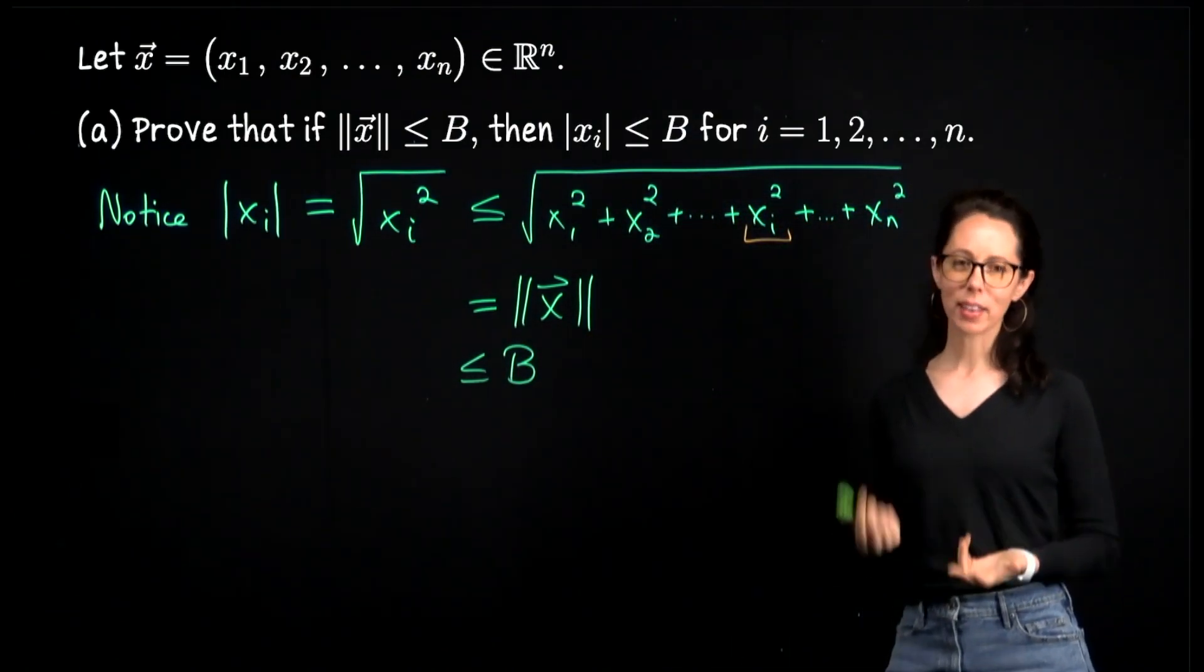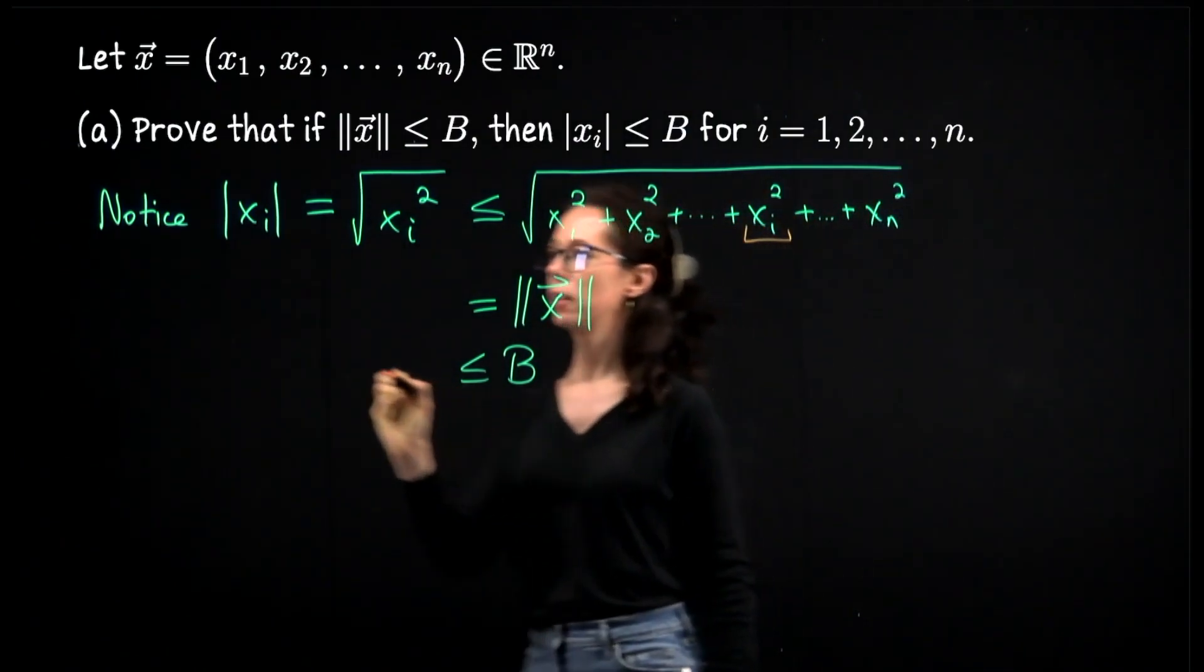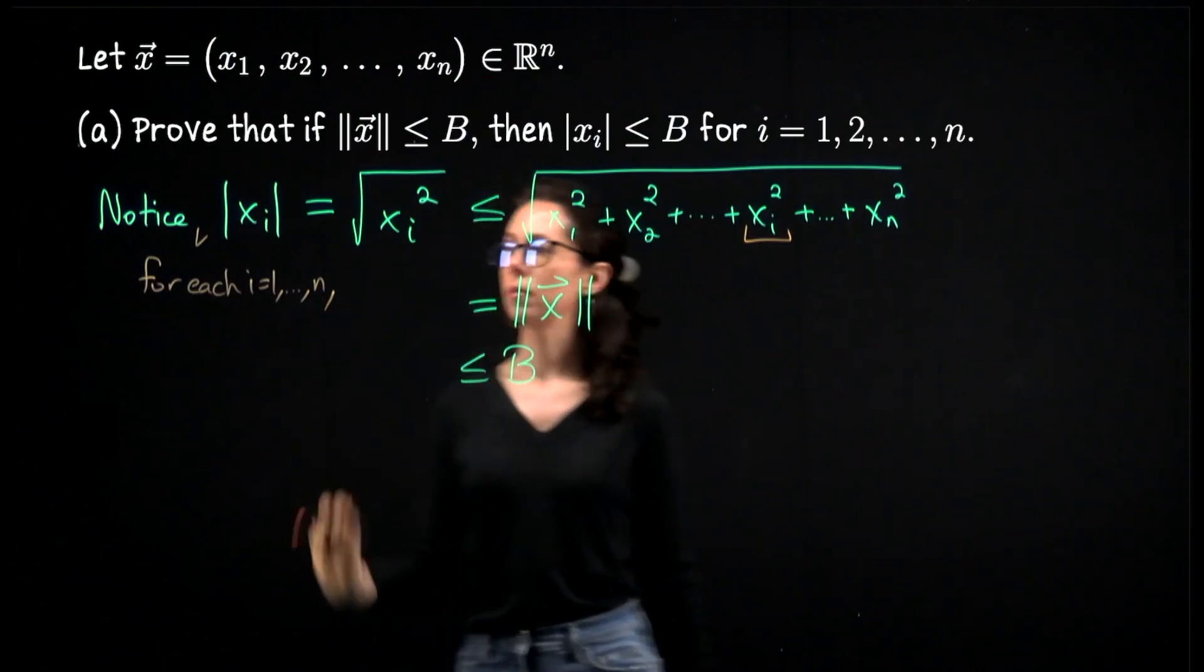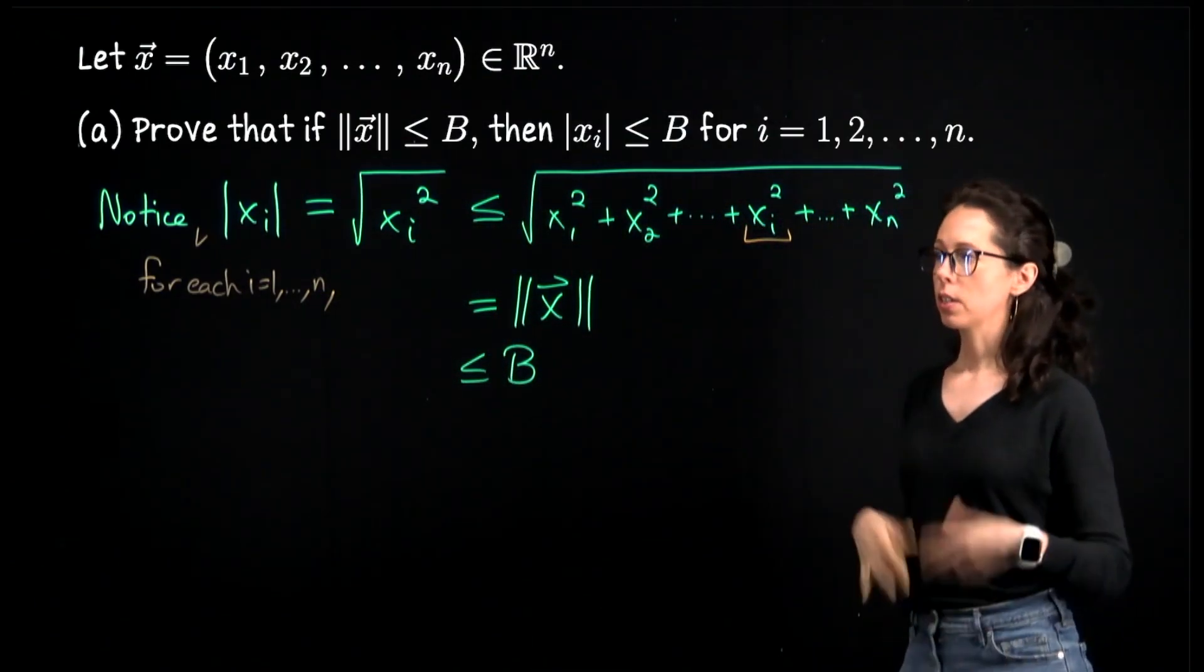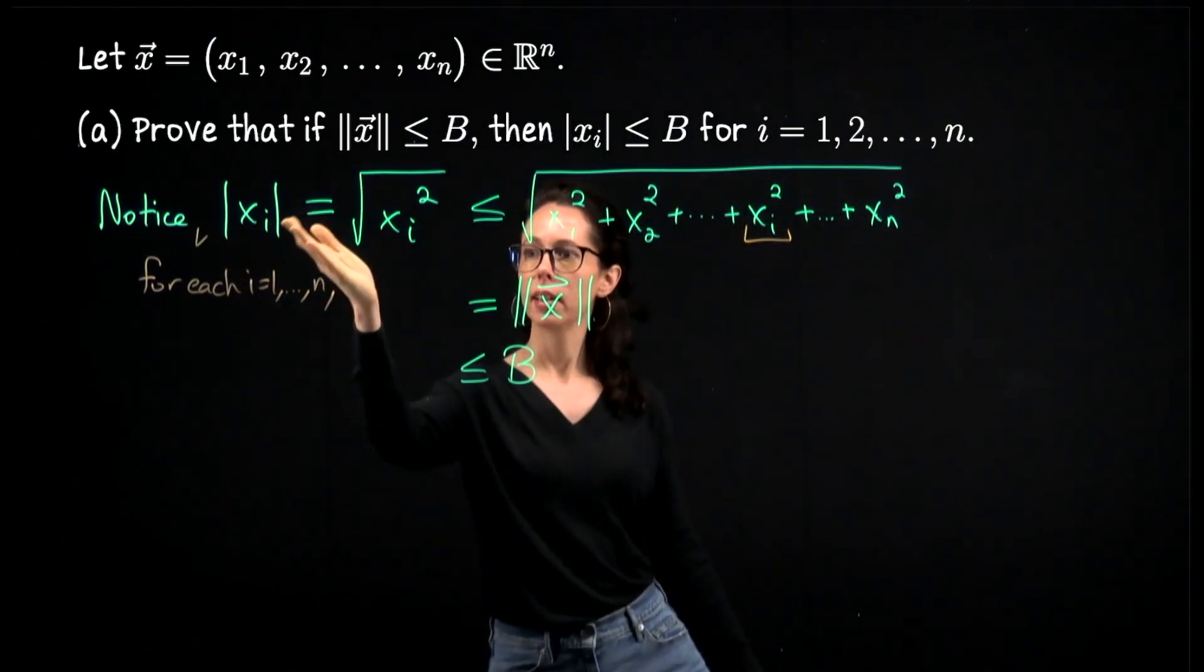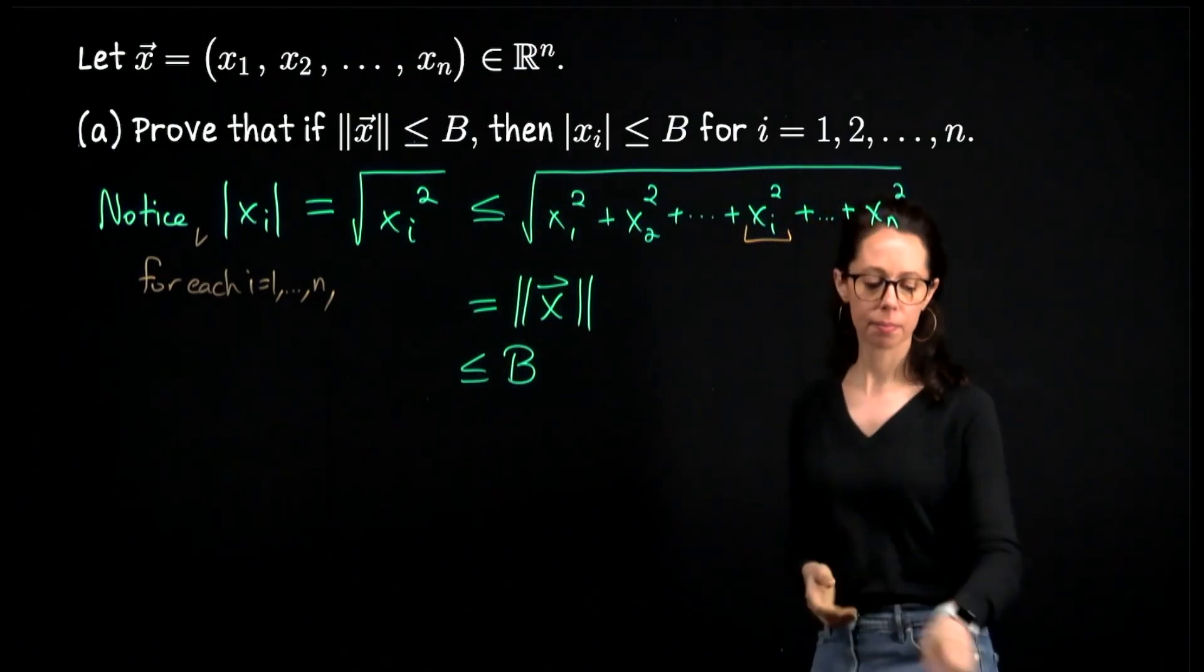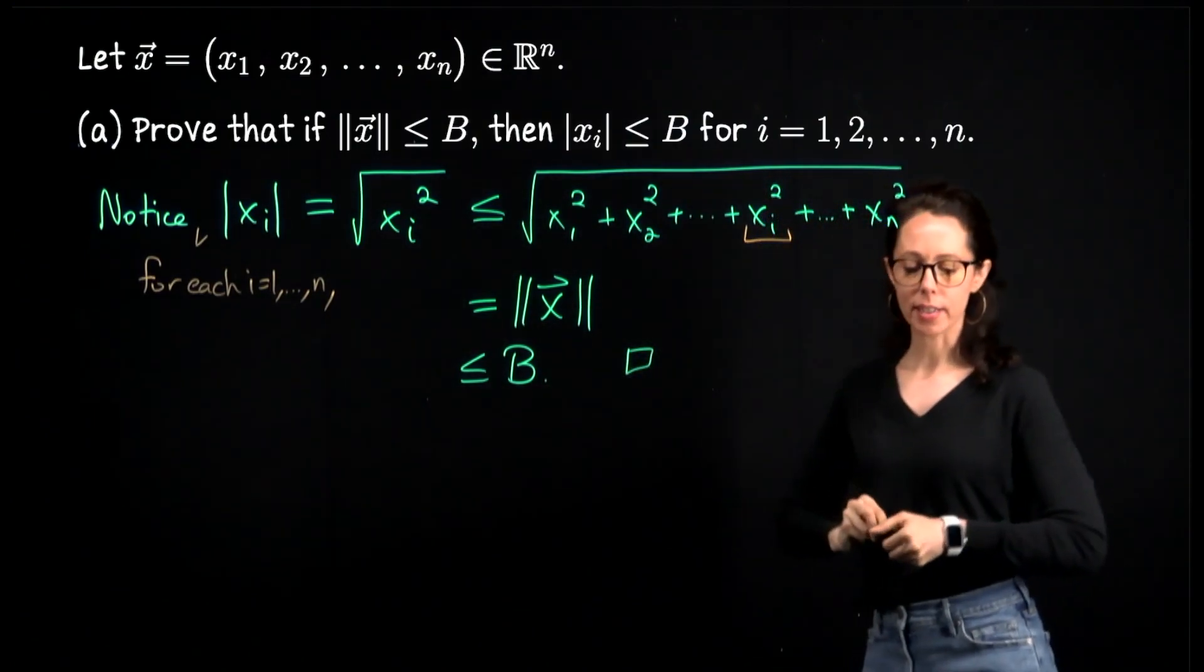If I were writing this down on paper, it was a little bit more formal than this context. I would probably drop in the phrase, for each index i, like that. Otherwise, this is all you need to show. So for each index i, the size of the ith coordinate is this, which is bounded above by this quantity, which is the length of x, which is bounded above by B. All right. This is a direct proof. That's all we need to say.